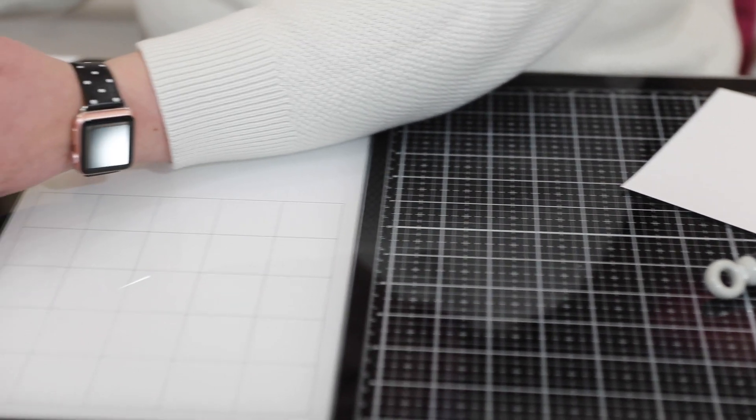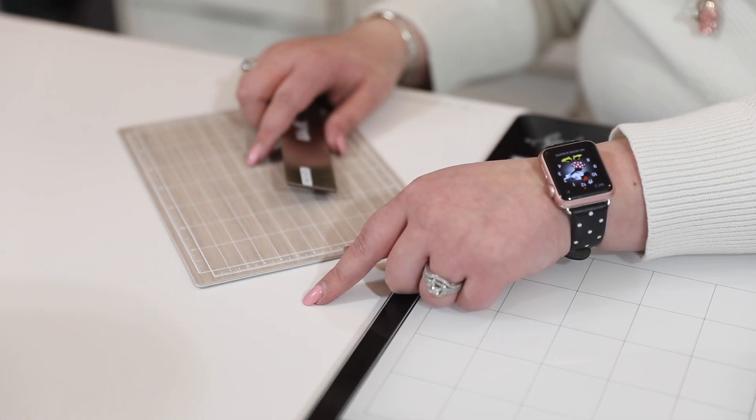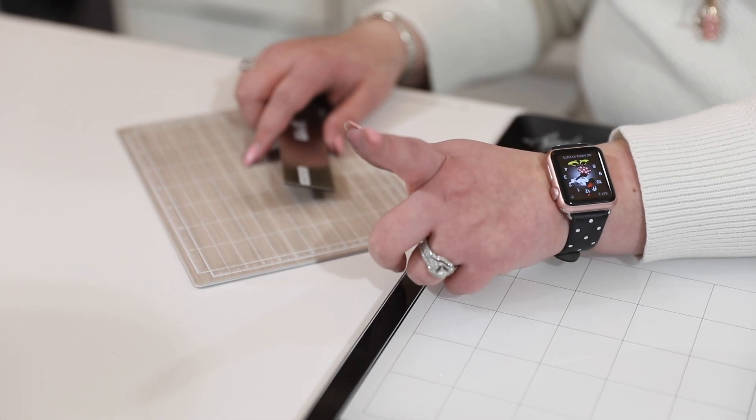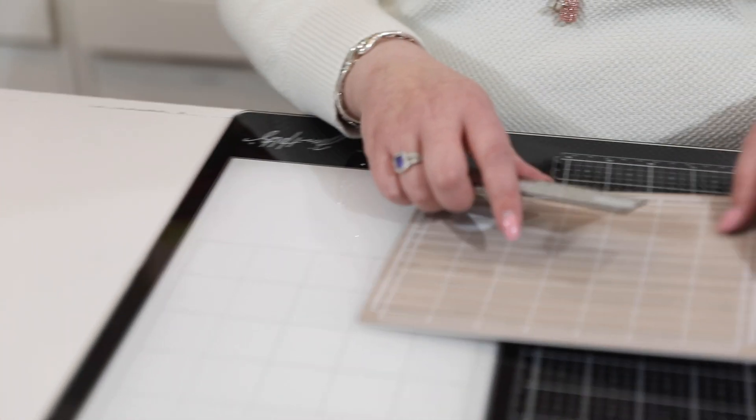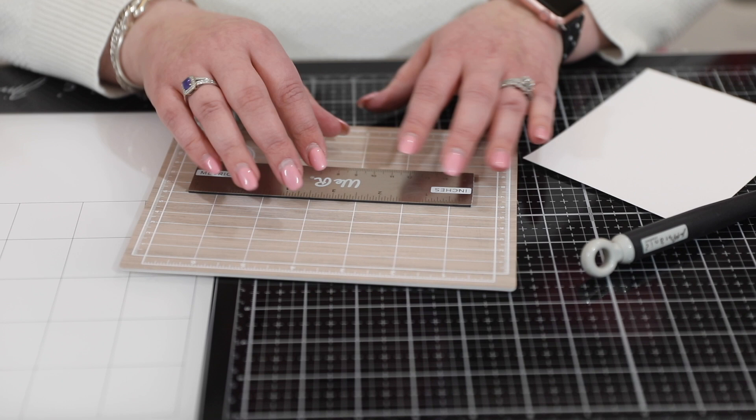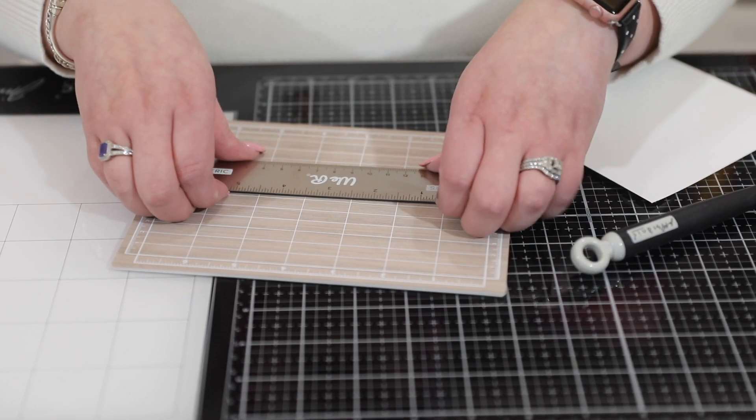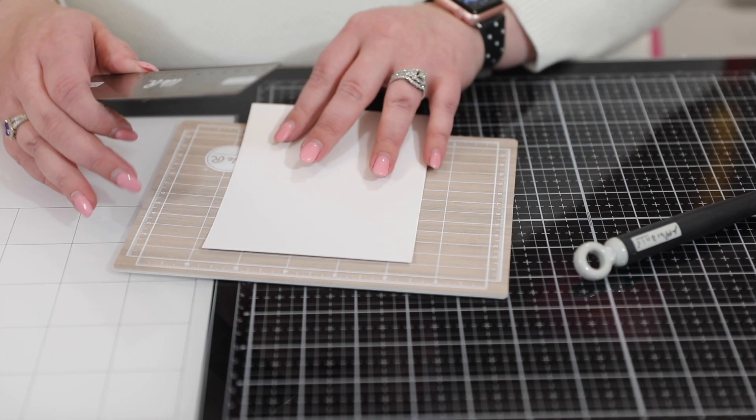Greg kind of gets cranky if I start cutting on this surface—he's like 'no you can't do that'—so this is why I grabbed this one. But I also like the fact that this ruler is magnetic because it means I can grab my card stock, pop it on here, line it up just like this, and pop my ruler on.